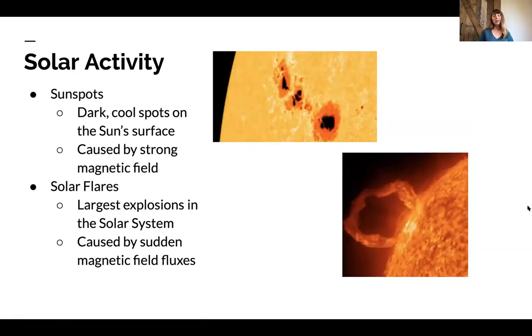Okay, so some general behaviors. A blanket term for the behavior of the Sun is solar activity. Some examples of solar activity are sunspots and solar flares. Sunspots are dark, cool spots on the Sun's surface. These are caused by a strong magnetic field. And by dark, cool spots on the Sun's surface, it's very dark, as you can see. And by cool, I still mean boiling, but by the Sun standards, it's a lot cooler than the rest of the Sun's surface. The reason for this is because the Sun has a very, very strong magnetic field, and sometimes in some areas it's so strong that heat and light just can't even get through to the surface.